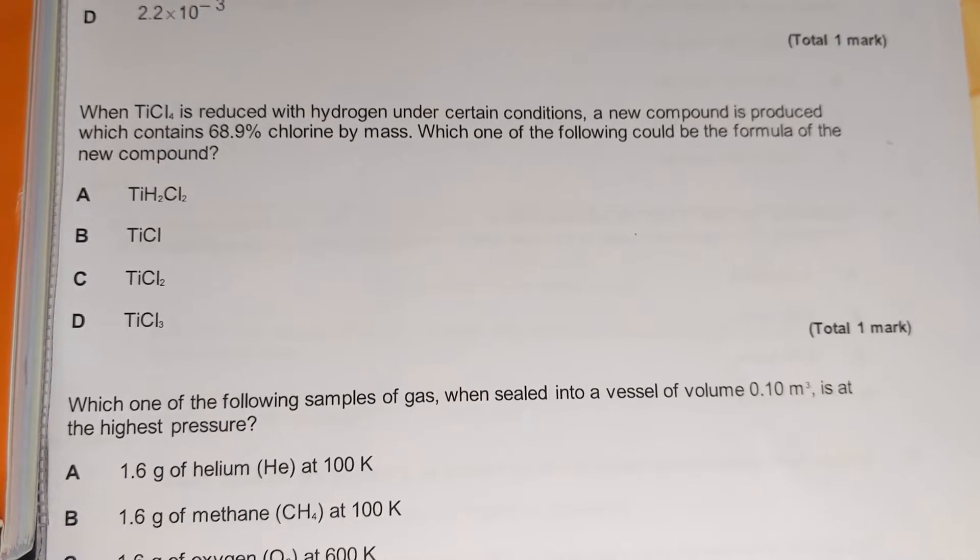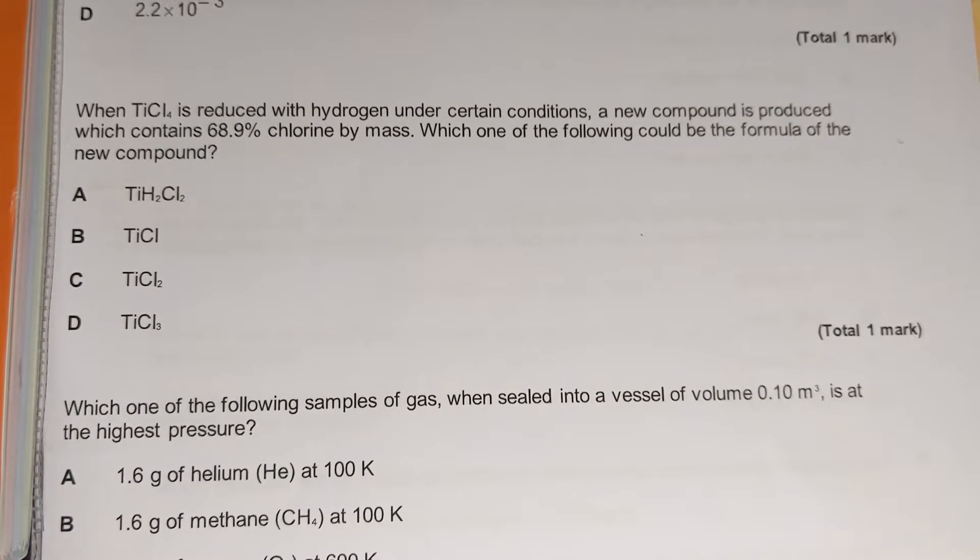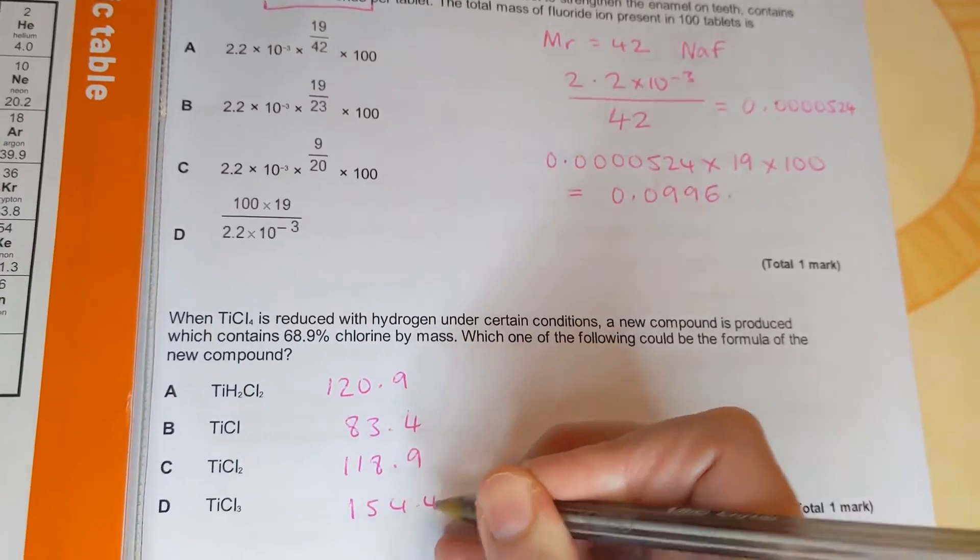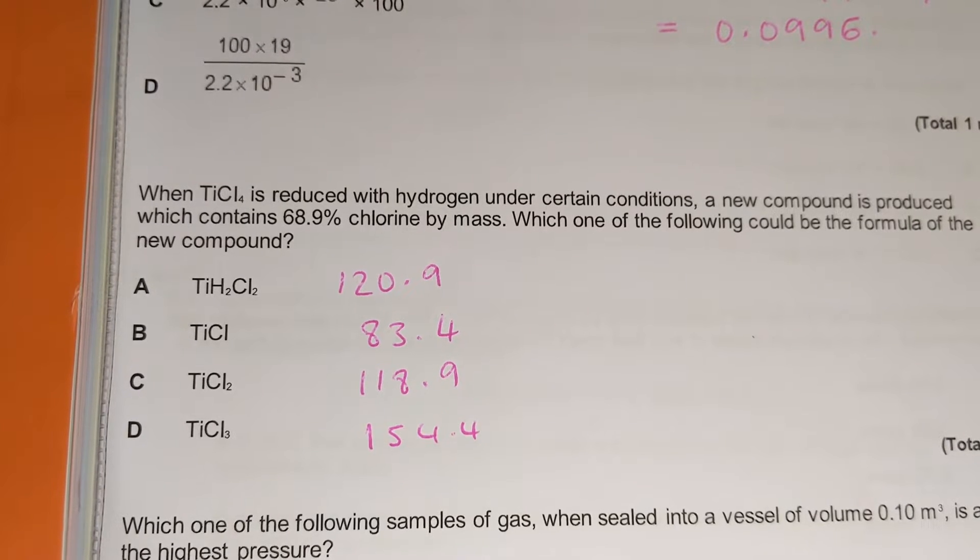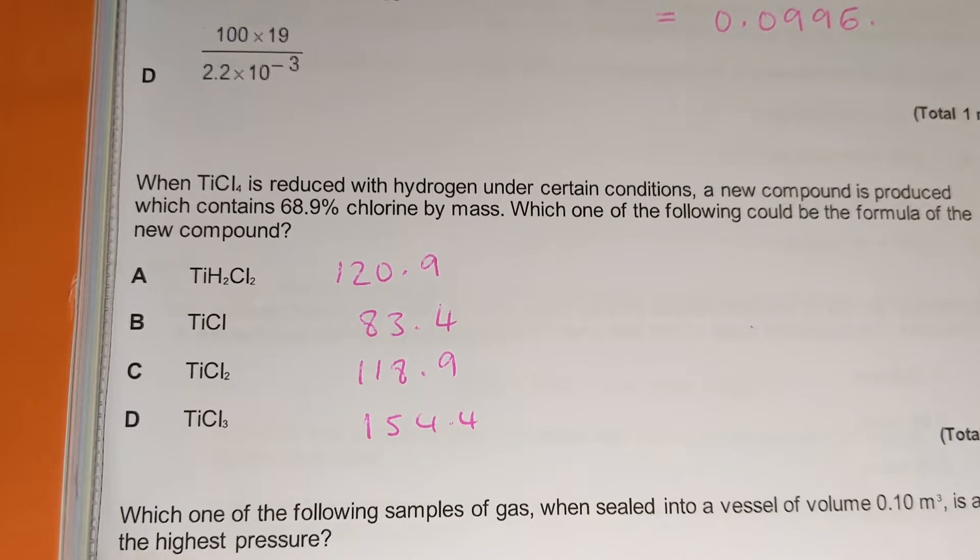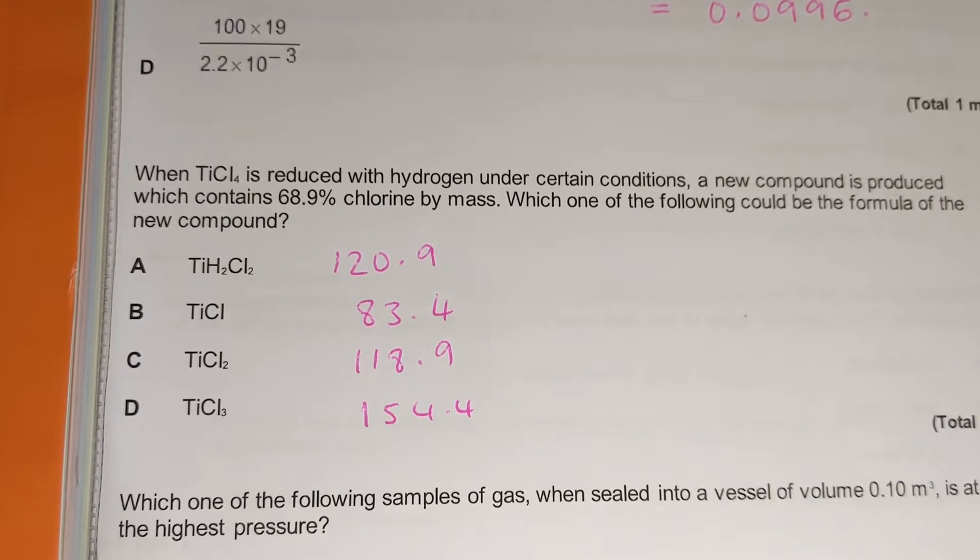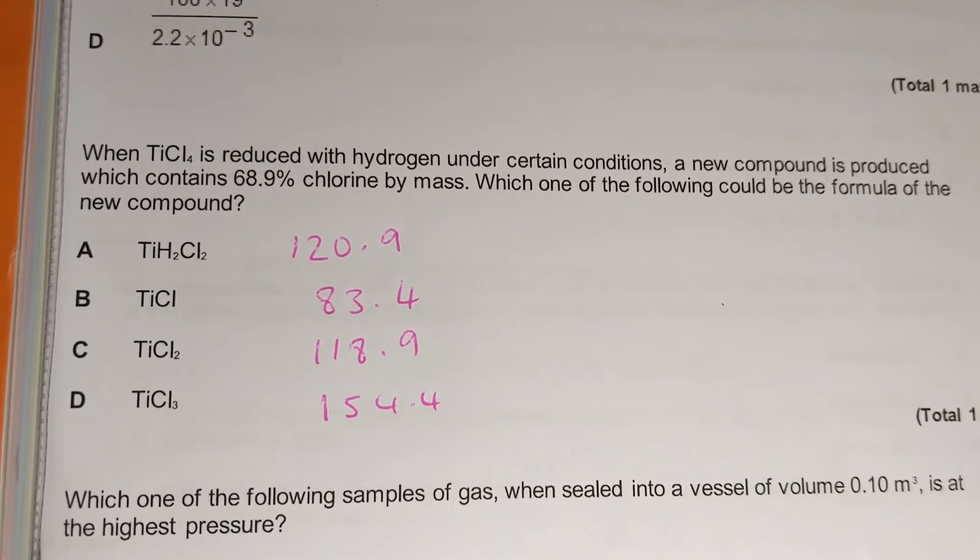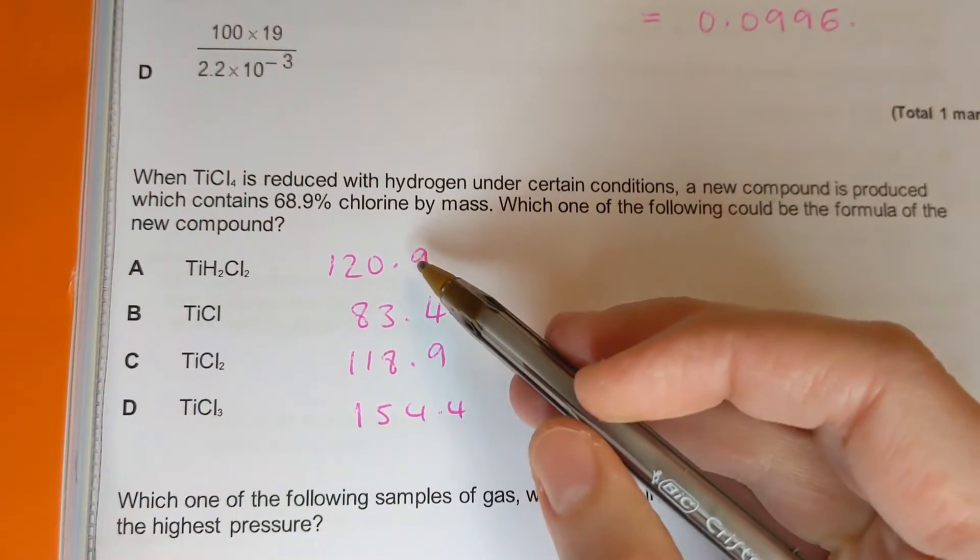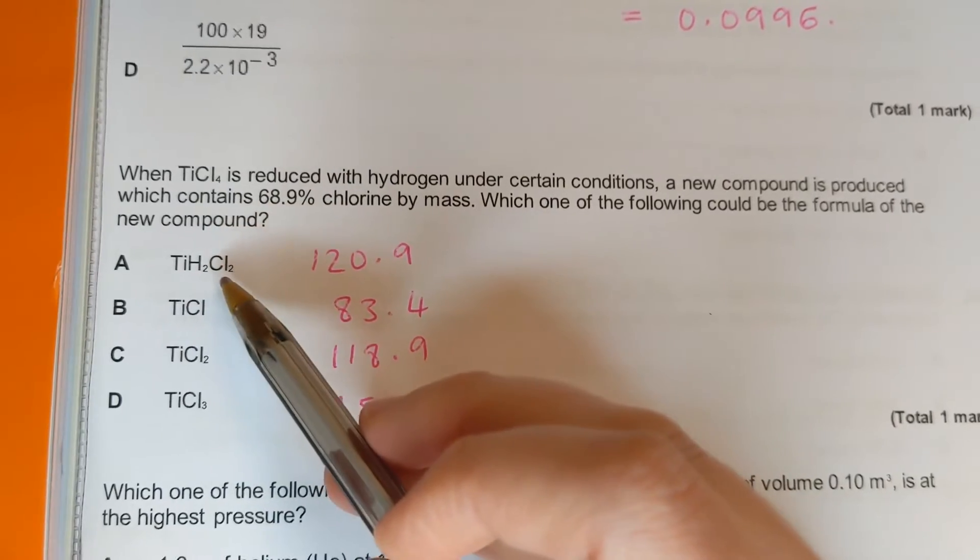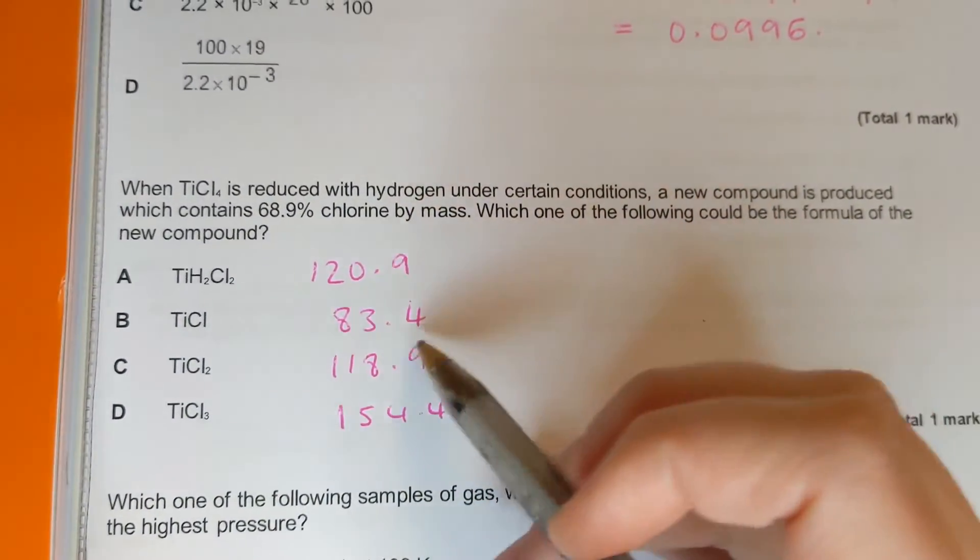The first thing we should do is to calculate the molar mass of each of those compounds. So pause the video here and have a go calculating the molar mass for each of those. Now you should have got numbers similar to those. It will depend slightly on if you've rounded your mass numbers from the periodic table but they should be very close to those numbers.